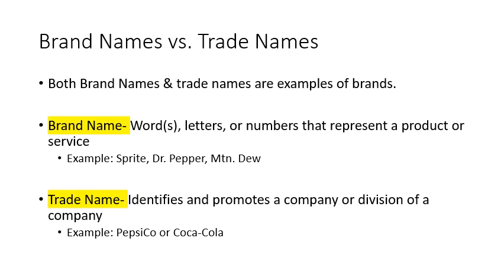A brand name is going to be words, letters, or numbers that represent a product or a service. This is the specific product that the customer buys at the store. Examples include Sprite, Dr. Pepper, and Mountain Dew — those are brand names.